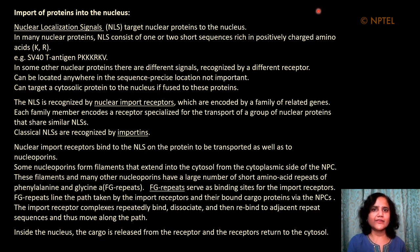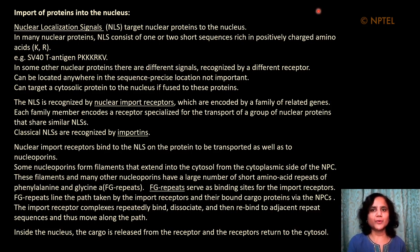The NLS can be located anywhere within the protein sequence — its precise location per se is not important. It can even target a cytosolic protein to the nucleus if this sequence is artificially fused to those proteins. The NLS is recognized by nuclear import receptors which are encoded by a family of related genes, each member encoding a receptor specialized to transport a group of nuclear proteins that share similar nuclear localization signals.